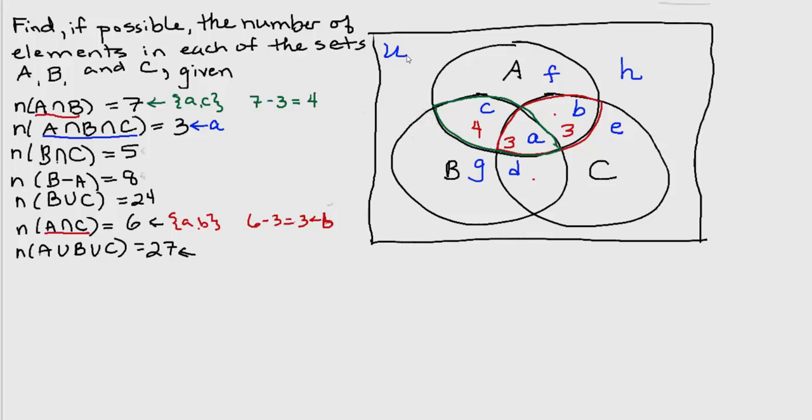Now there's one more intersection of two of the large original sets, capital A, capital B, and capital C. And that's the intersection between capital B and capital C. And we have information about that one over here as well. There are five elements in that one. Let's identify which regions are in that intersection.